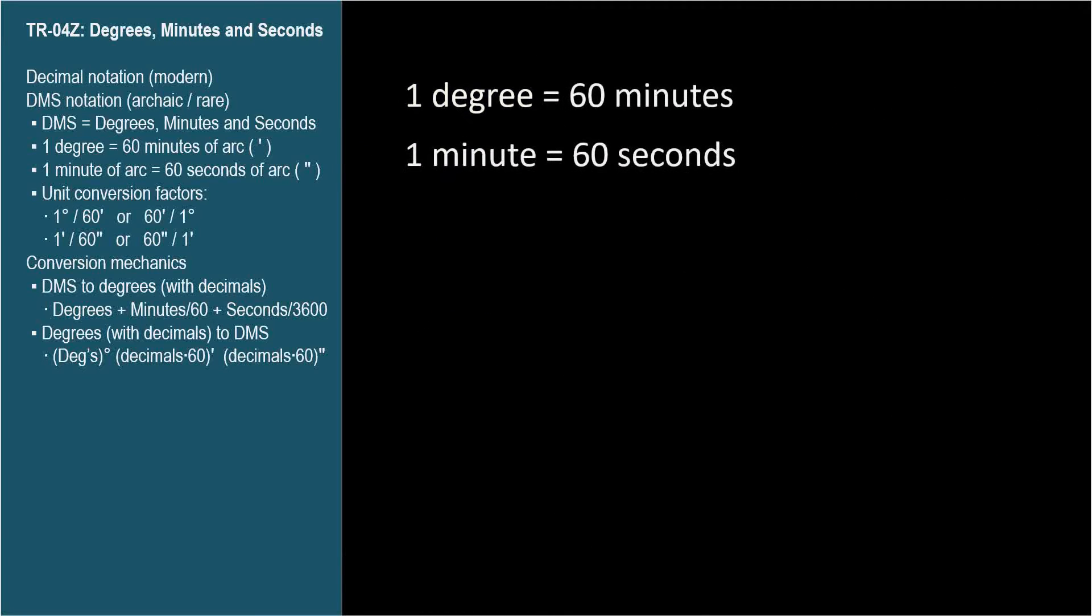So, one degree equals 60 minutes of arc. The symbol for minute is the prime character that looks like a single quote. One minute equals 60 seconds of arc. The symbol for second is the double prime character that looks like a double quote.